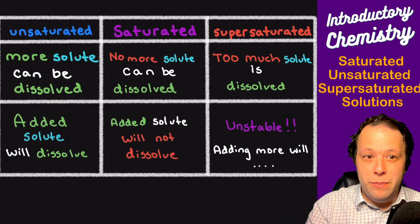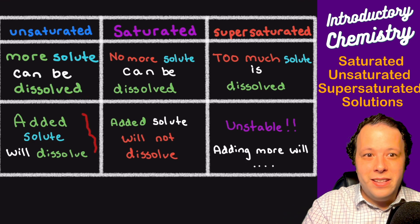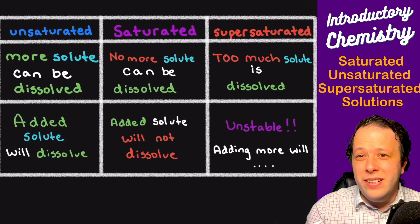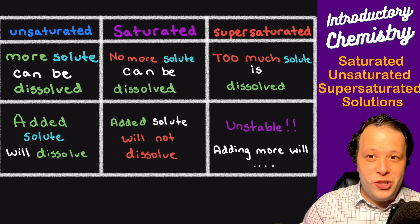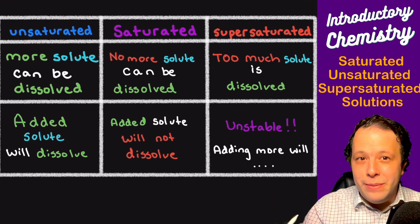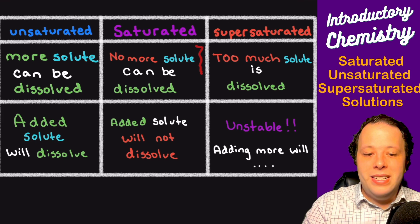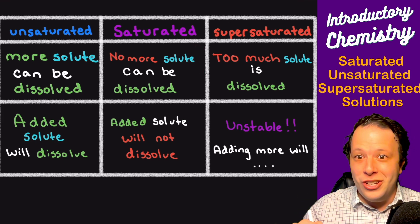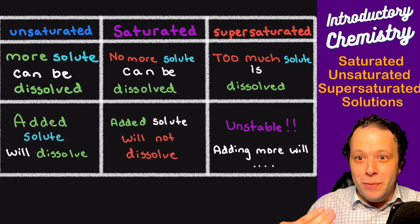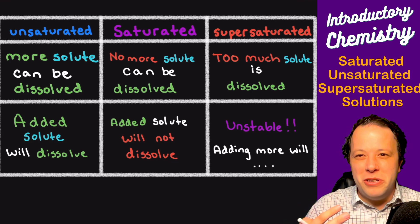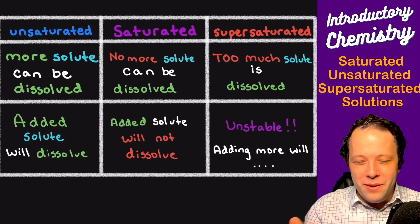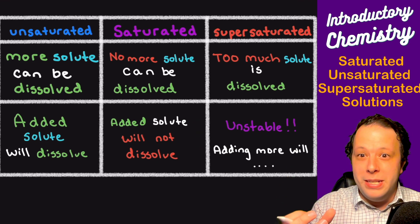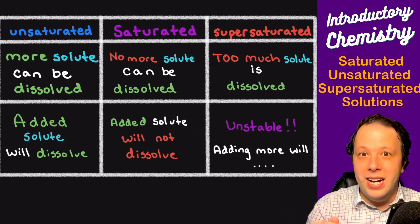More can be dissolved. You can add more. By adding solute it will dissolve. It's not quite sweet enough for you. You want to add a little bit more sugar to your tea. You can do that. Saturated means that no more can be dissolved. It's at its maximum. It's just right. Any more would be too gross. If you add more to it then it'll start precipitating out. It will not dissolve.